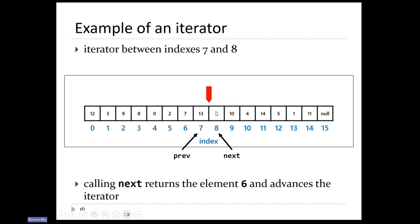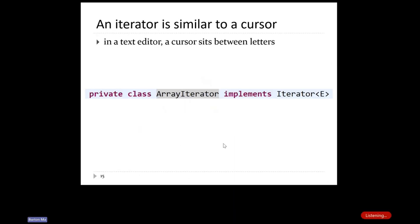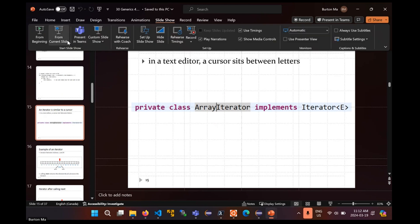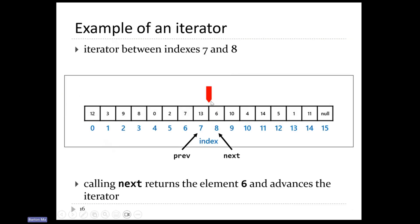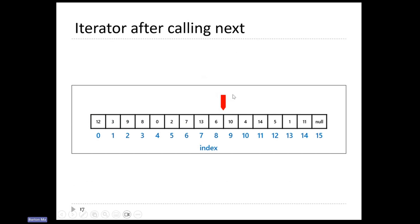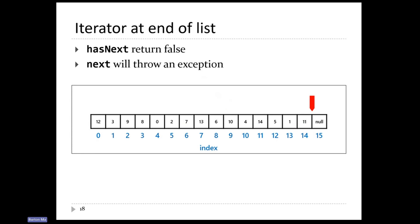After you call next, the iterator moves one position to the right. If you keep calling next until you've visited all the elements in the list, the iterator ends up at the end — at this point hasNext will return false because there are no more elements, and calling next will throw an exception. At the start of the list there is no previous element, so we're going to set previous equal to minus one in that case. Next will be zero. Previous and next are the indexes that the iterator is sitting between.